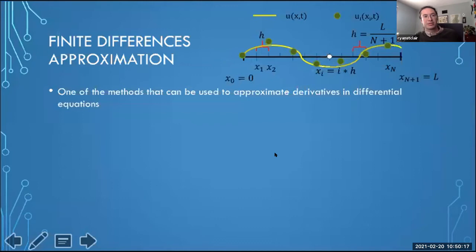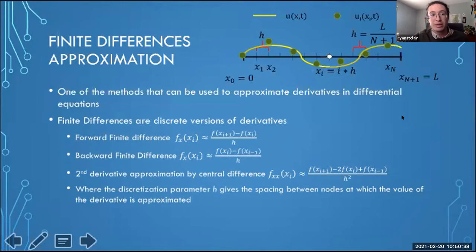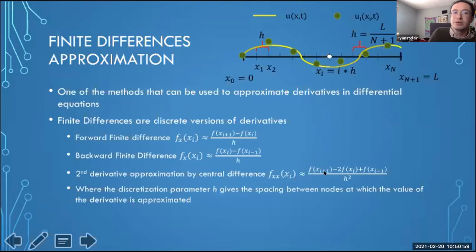The method of discretization I used was finite differences. Finite differences include forward and backward differences, which look much like your standard definition of a derivative except you're not letting h go to zero — you're keeping them at several points. H is your mesh parameter, or discretization parameter — your step size between individual nodes. H equals the length of the string divided by the number of nodes plus one. We have a second derivative approximation done by central difference, which takes a forward then backward difference.